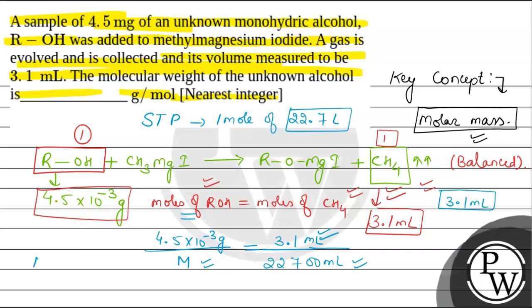The final value of M comes out to be 33 gram per mole. This is the required answer for this question. Hope you understood well — best of luck, thank you.